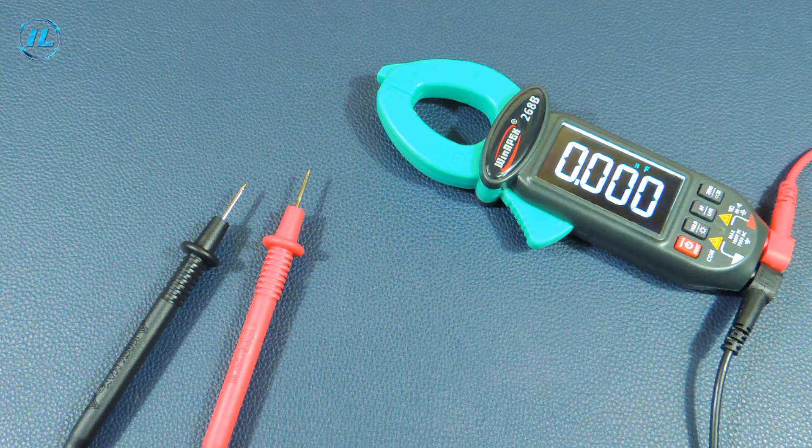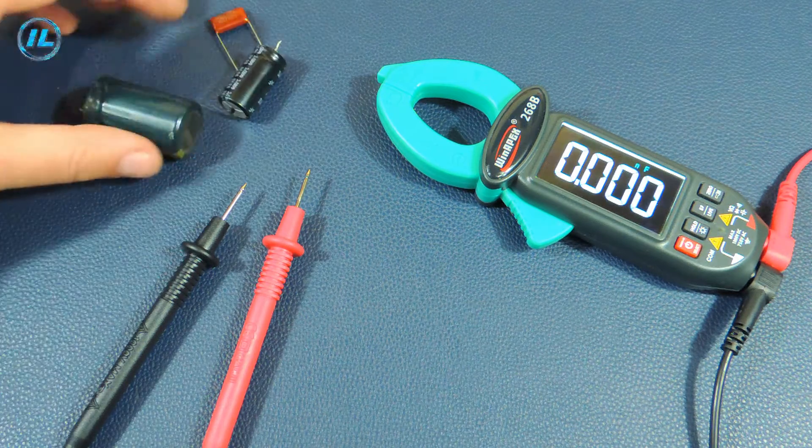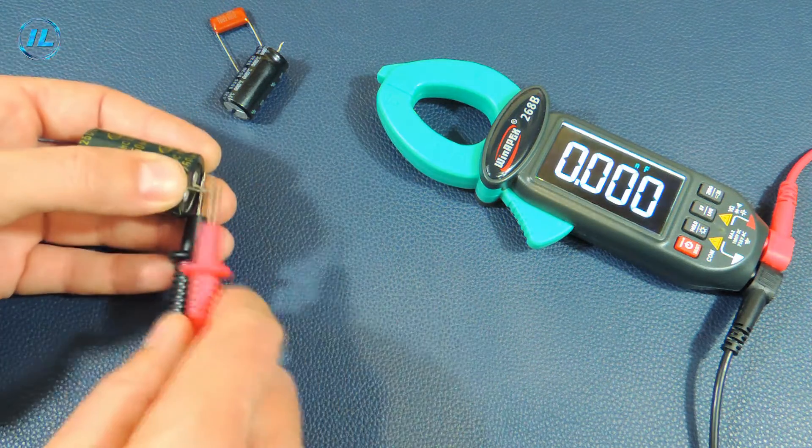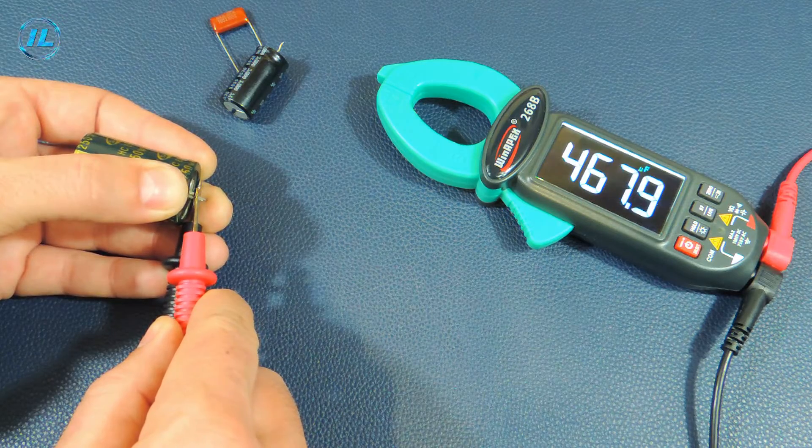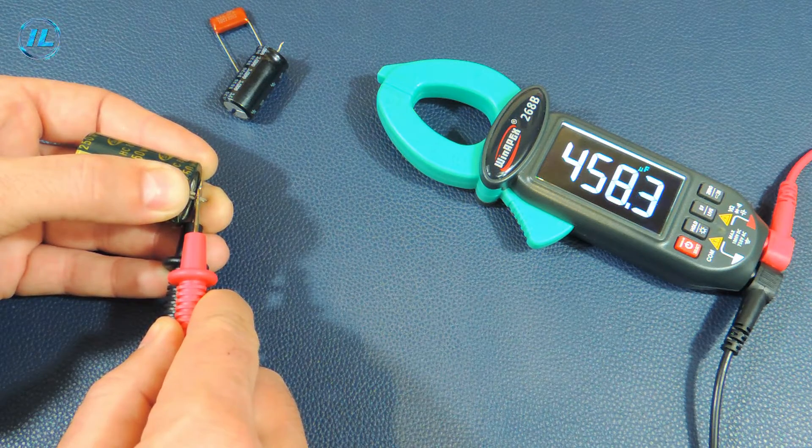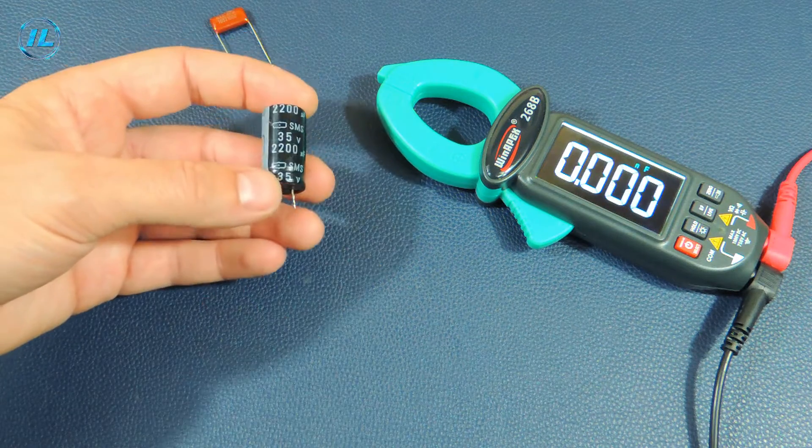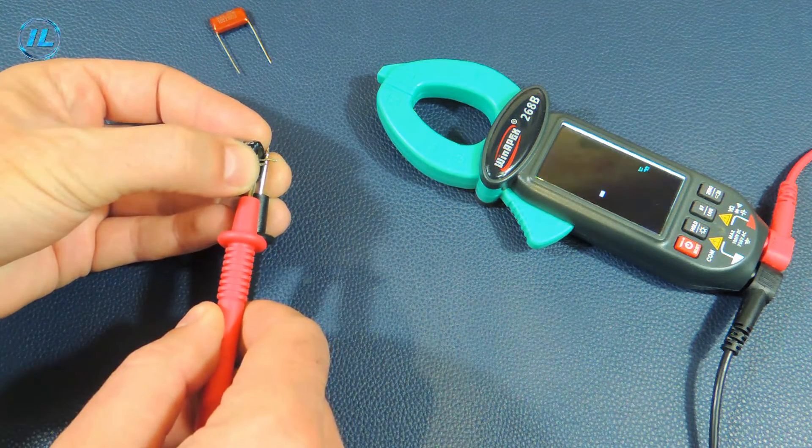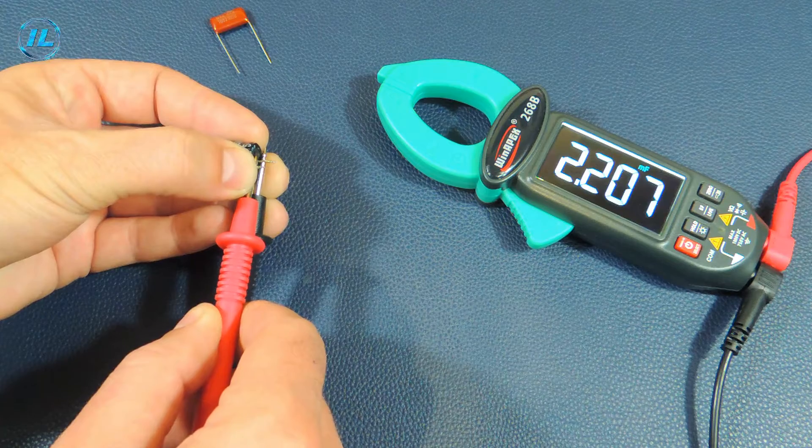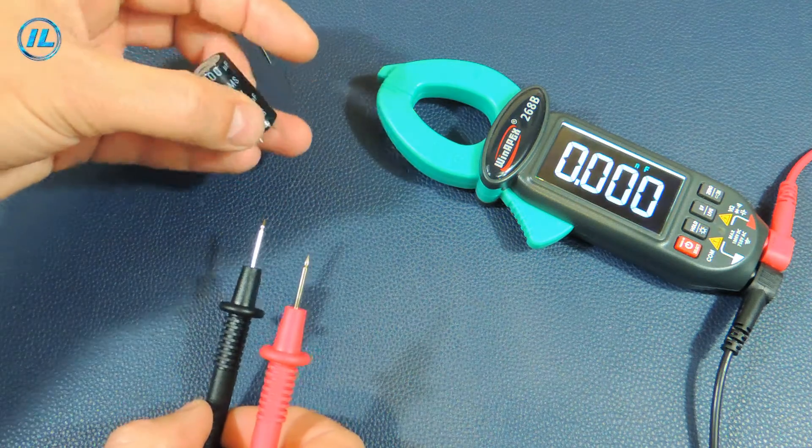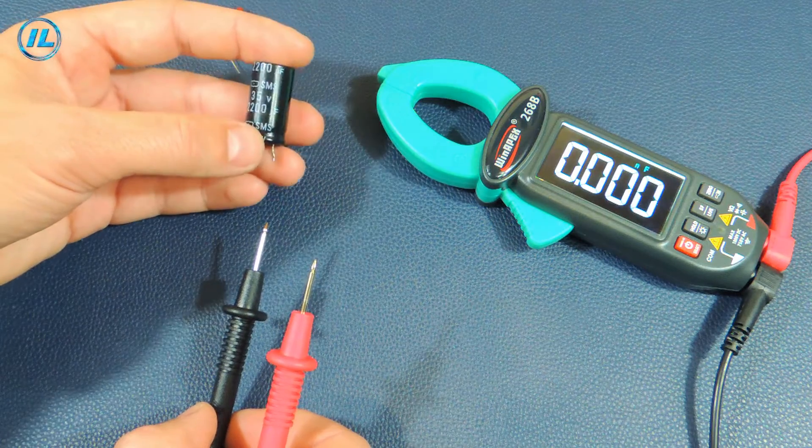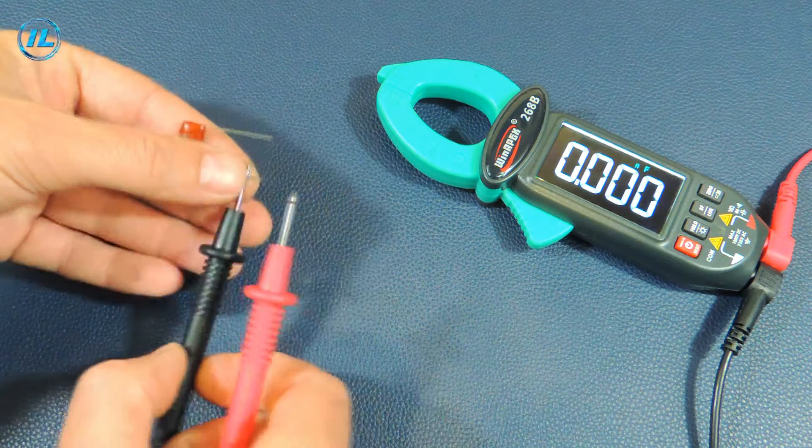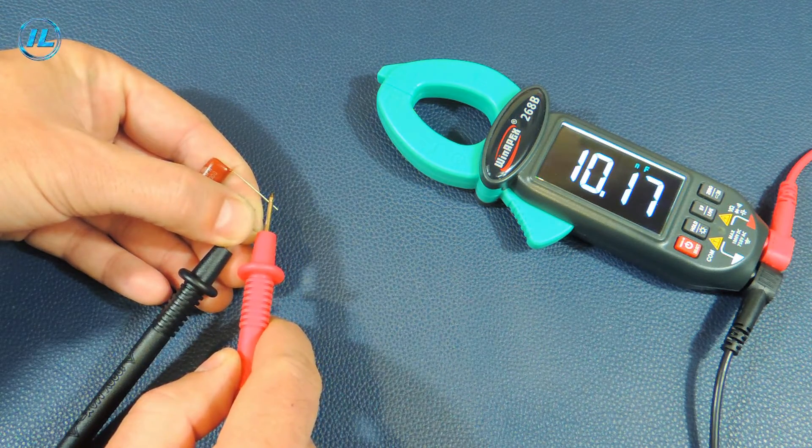Next, the capacity measurement mode. I'll check some capacitors. Electrolytic capacitor for 470 microfarads. The device shows 466 microfarads. Another electrolytic capacitor for 2200 microfarads. 2200 microfarads. That's right. It took about 4 seconds for the device to measure such a capacity. This is a pretty good result. And another capacitor for 10 nanofarads. Exactly 10 nanofarads.